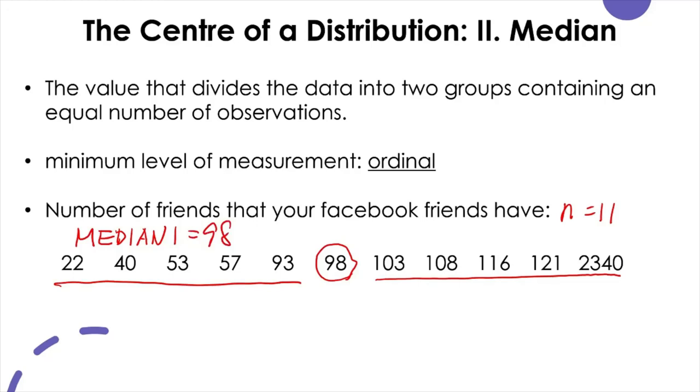Now, you think that one of your friends is kind of an oddball, as that person seems to have an unrealistic number of friends. So I'm talking about this one with over 2,000 Facebook friends. It seems like this friend is a celebrity or something. So you want to calculate the median again after you remove this celebrity friend.